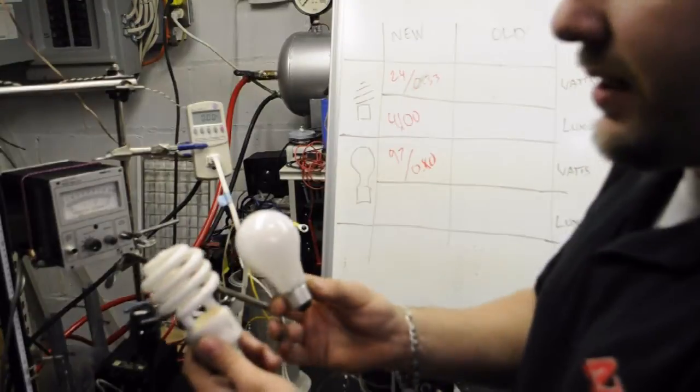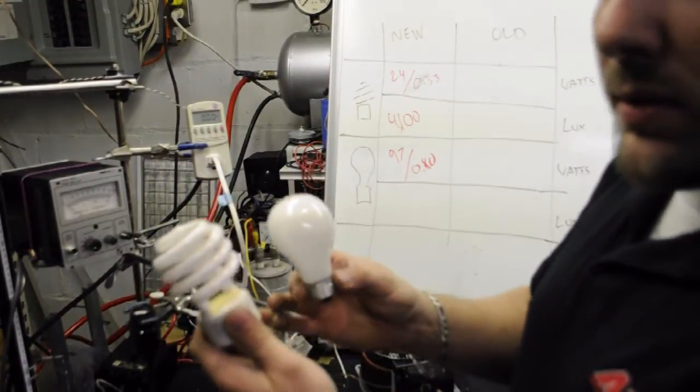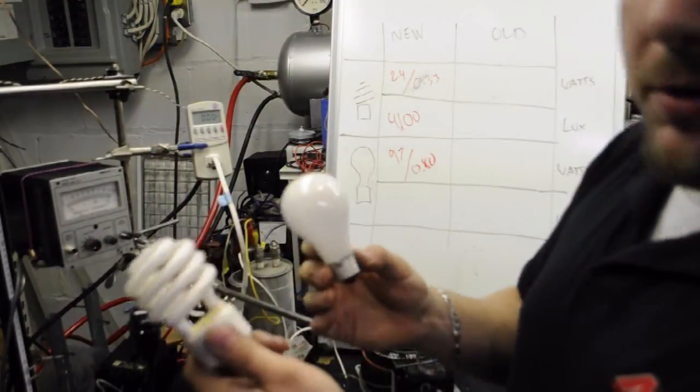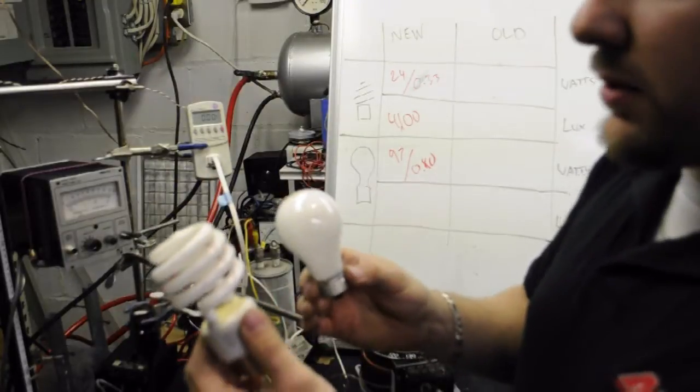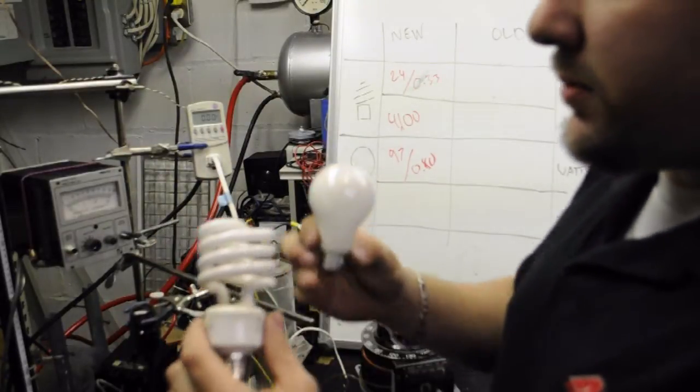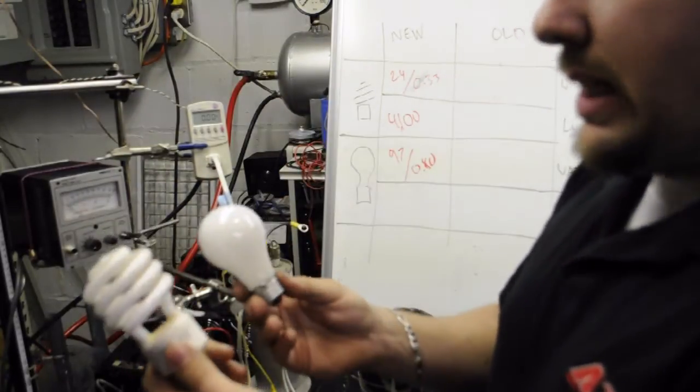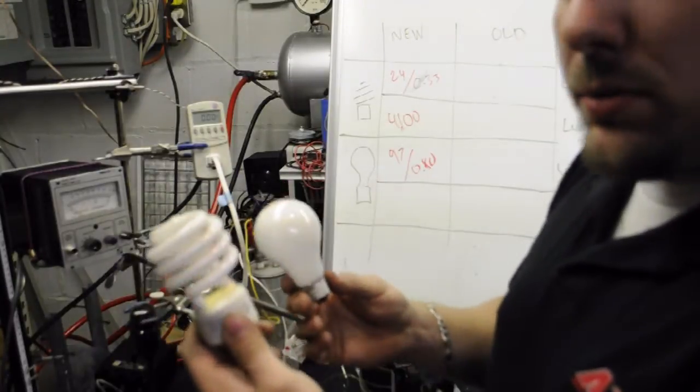Here is a compact fluorescent and an incandescent that have both been in use for four and a half years. These are both in my garage. They were installed within a few months of each other. This is about as close as I can get. And it's still got some dust on it. So let's see if the values still hold true as they get older.